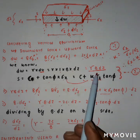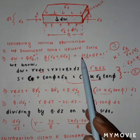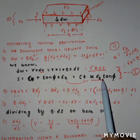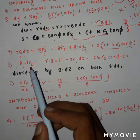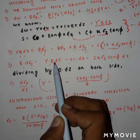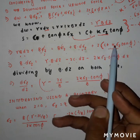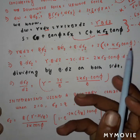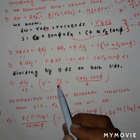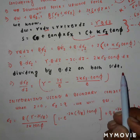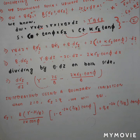Substituting into the equilibrium equation, we get: dw + b×σz = b×(σz + dσz) + 2s×dz. This simplifies to: b × dσz = γ×b×dz − 2c×dz − 2k×σz×tan φ×dz. Dividing both sides by b×dz gives: dσz/dz = γ − 2c/b − (2k×tan φ/b)×σz.